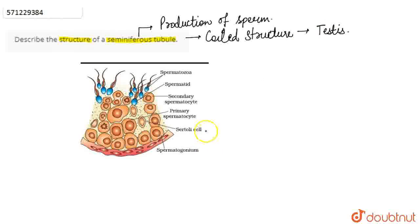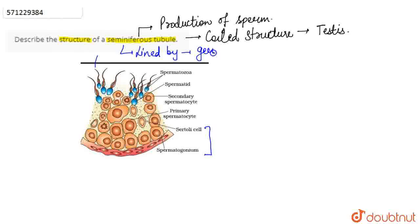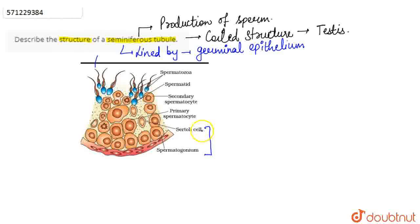Here we can say that there are two types of cells present: the spermatogonium and the Sertoli cells. On the outer side, the seminiferous tubule is basically lined by a layer of cells which is known as germinal epithelium. It is lined with the germinal epithelium on the outside. In the diagram itself we can see two types of cells present — spermatogonium and the Sertoli cells.